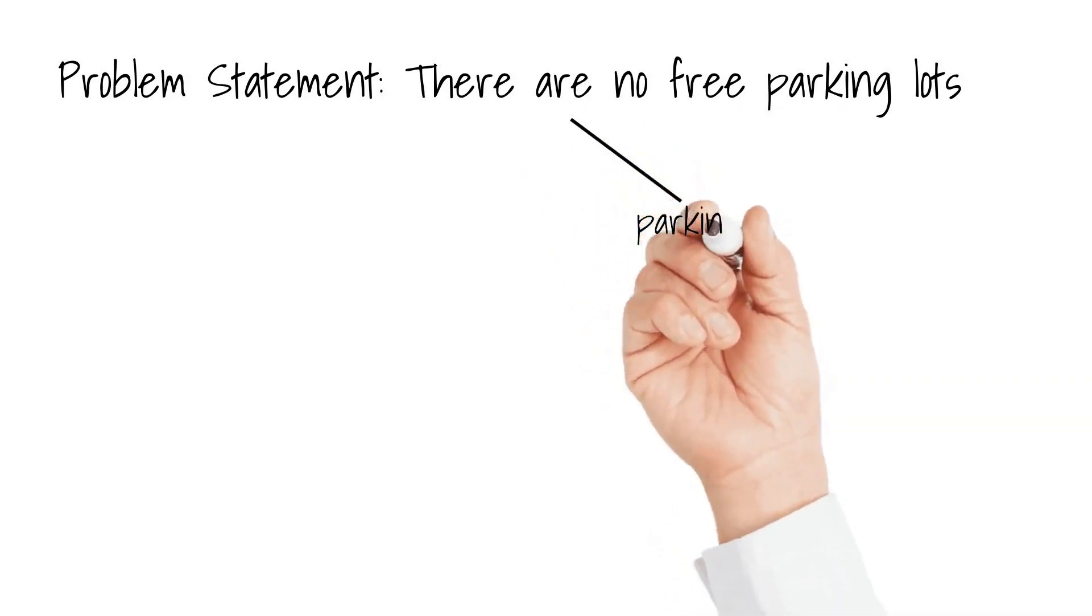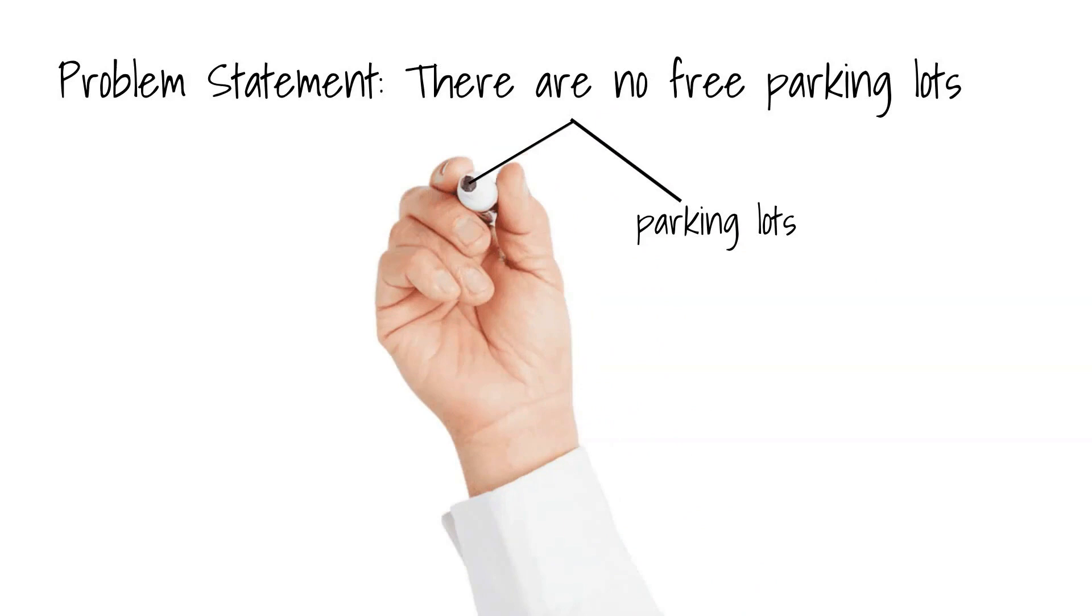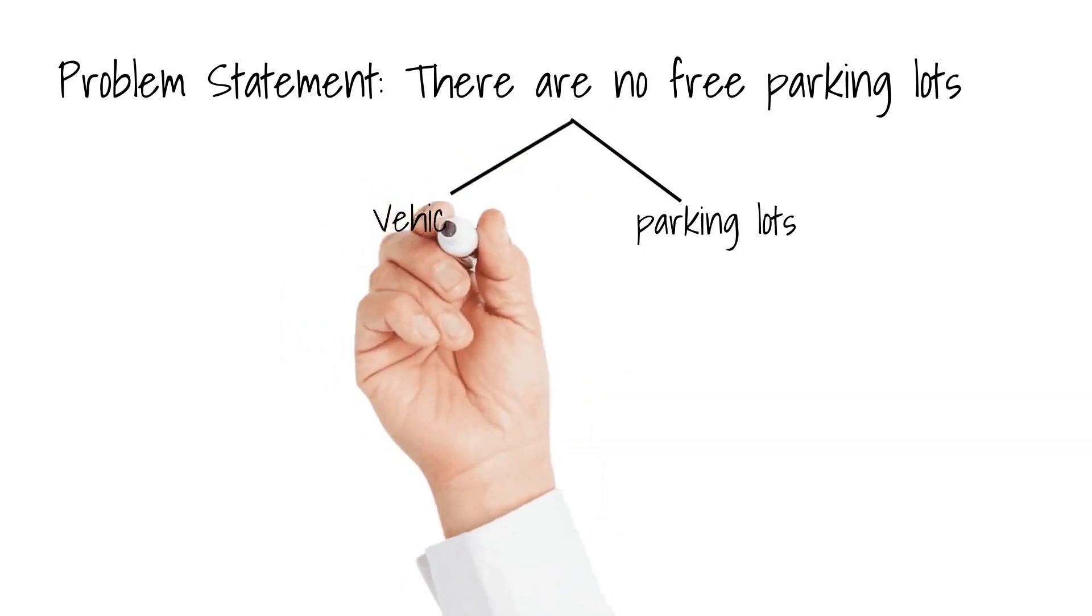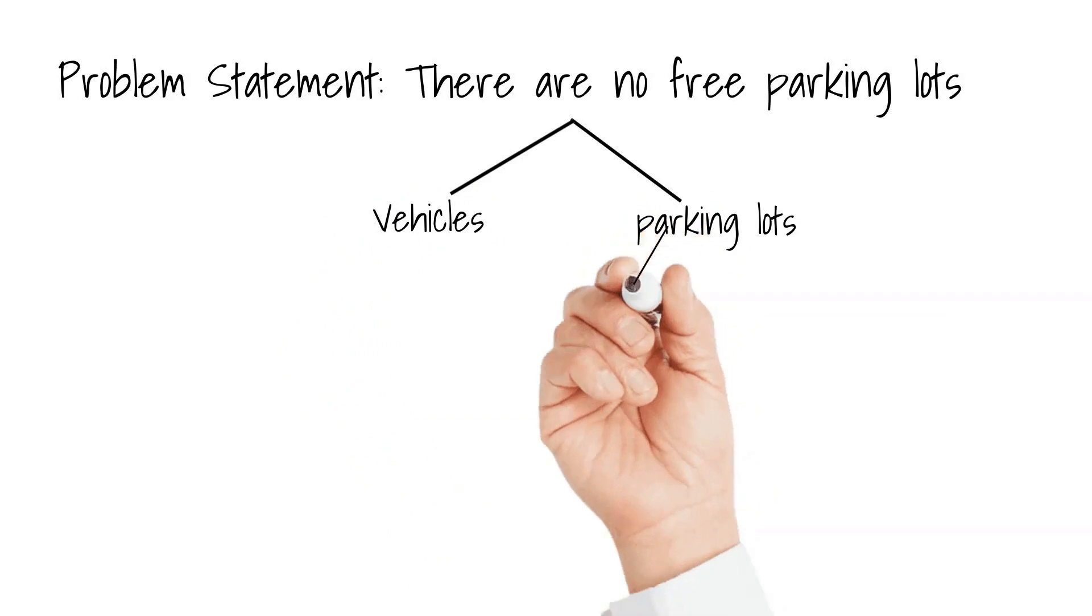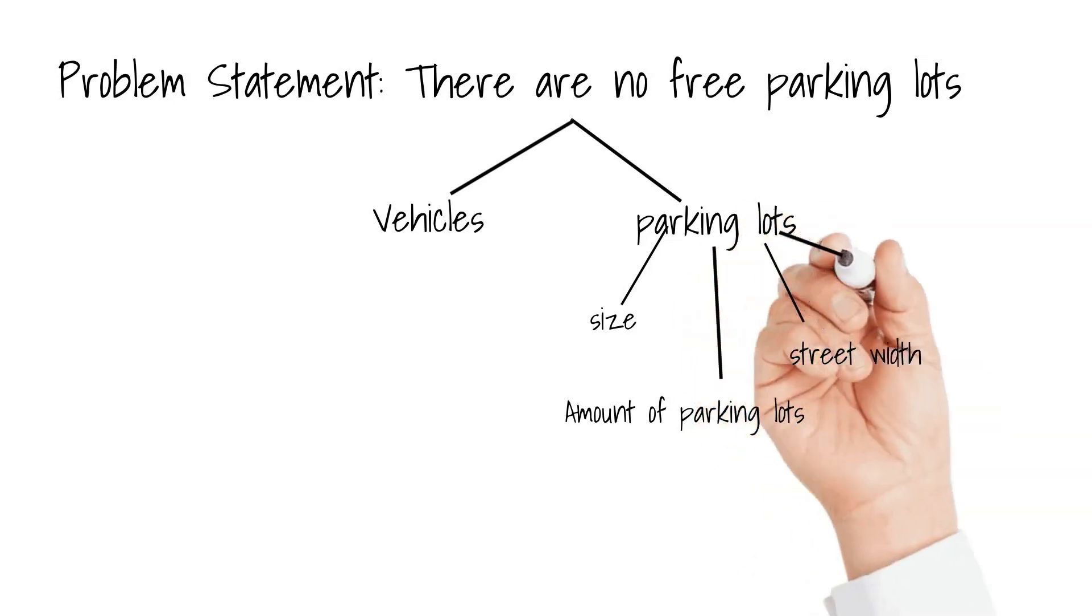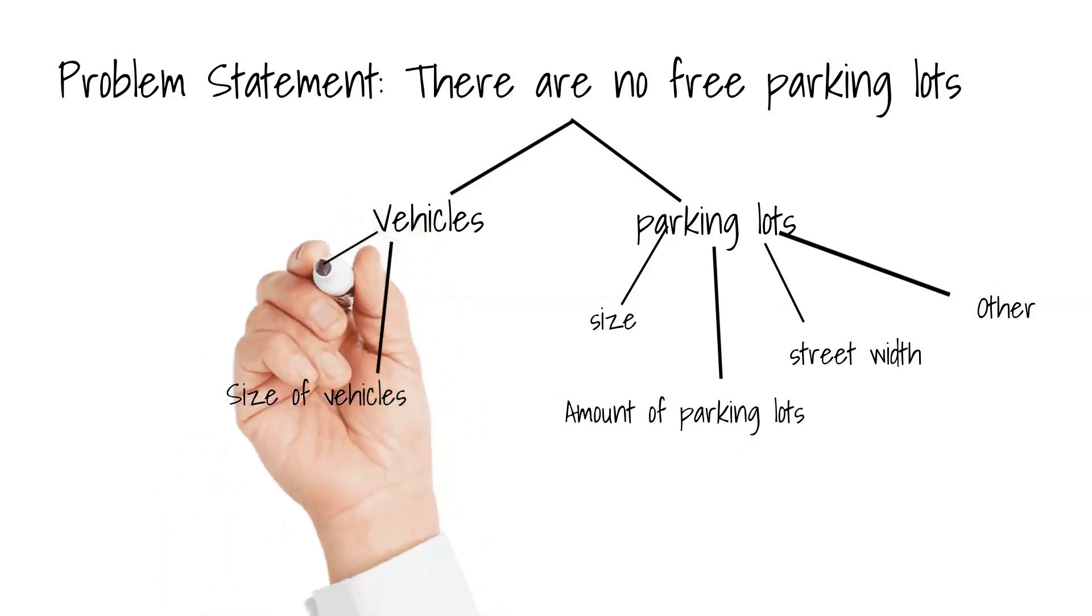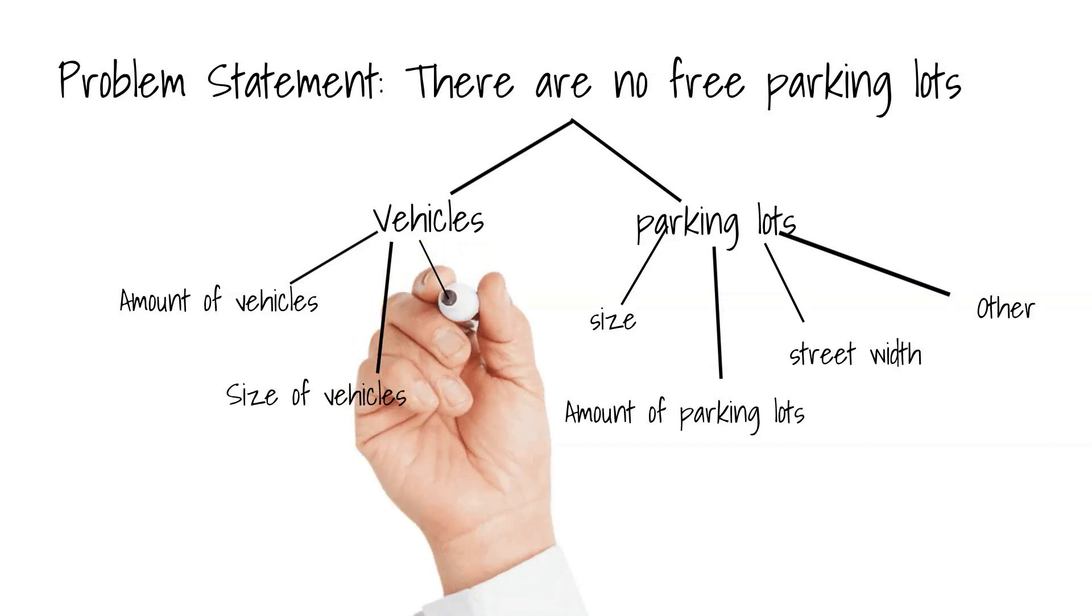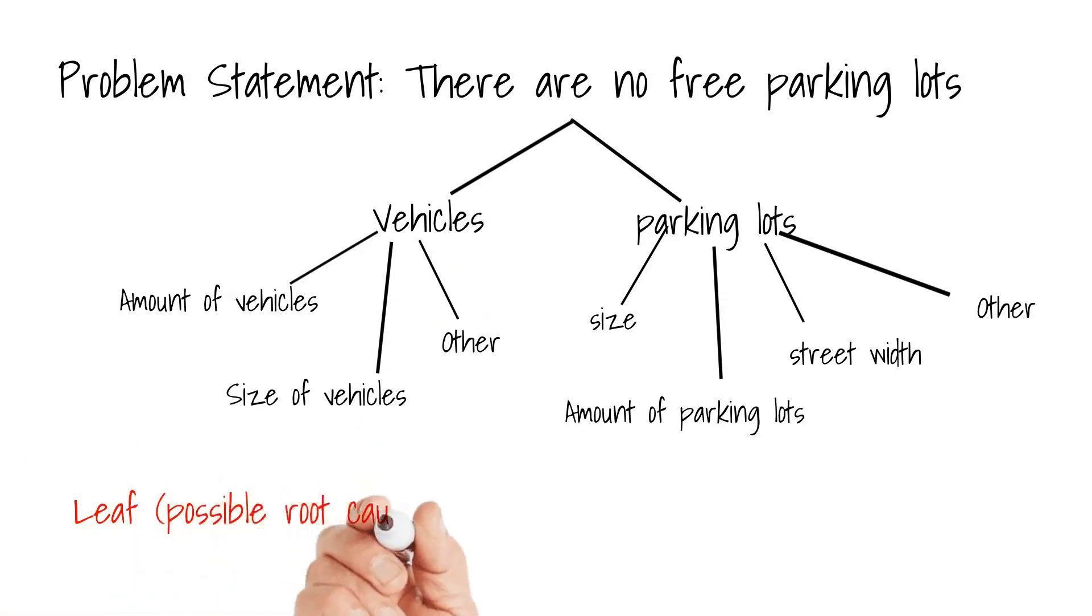Let's take the parking lot example. The problem was that the streets are fully packed with cars and there are no free available parking lots. When I try to think divergently, in my mind I have the following components: parking lots and vehicles. Let's further refine each branch. Which subcomponents are part of parking lots? What about the size of a parking lot or the amount of parking lots, or also the width of the streets. And what comes to mind when thinking about vehicles? Maybe the size or also the amount of cars. When we cannot refine a branch even more, we have come to a leaf, a possible root cause.